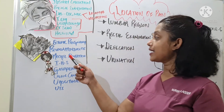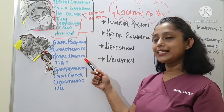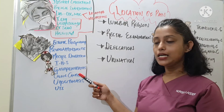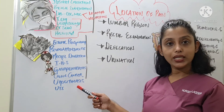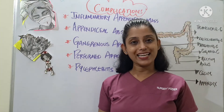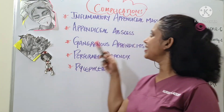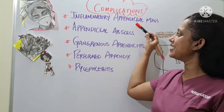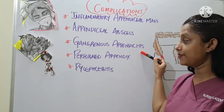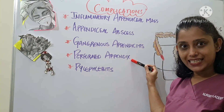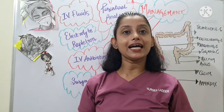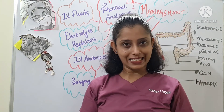The differential diagnosis related to acute appendicitis includes ectopic pregnancy, pseudo-appendicitis, Meckel's diverticulum, inflammatory bowel syndrome, gastroenteritis, colon cancer, urolithiasis, and urinary tract infections. The main complications of appendicitis include inflammatory appendicitis mass, appendiceal abscess, gangrenous appendicitis, perforated appendix, and pylephlebitis.